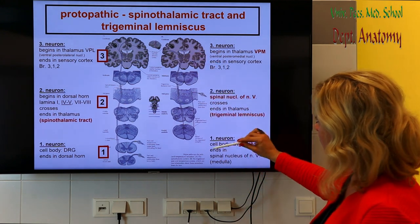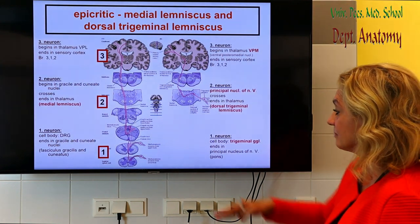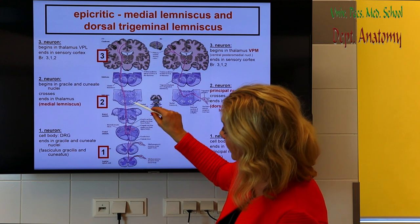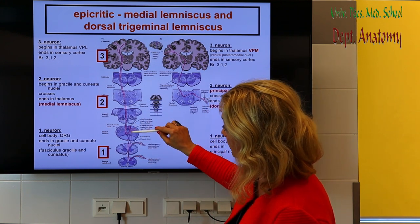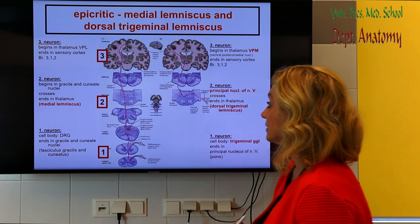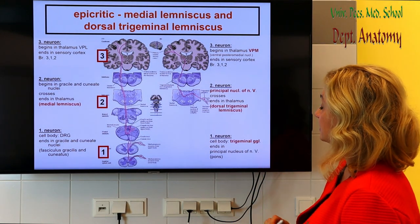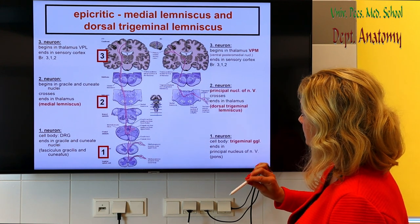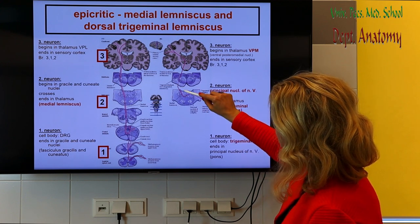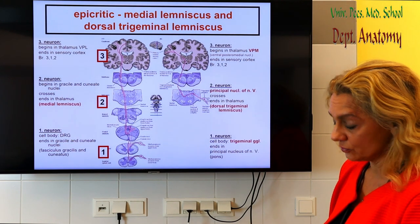From the thalamus, fibers project to the sensory cortex in the face area. So we have the three-neuron system here too. For the epicritic system it is basically the same — three steps — and the difference is where the second neuron is. The first neuron is in the trigeminal ganglion, enters at the level of the pons where we have the principal nucleus, then after the synapse the tract crosses and ends in the ventral posterior medial nucleus of the thalamus, and from there to the cortex.